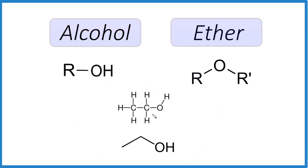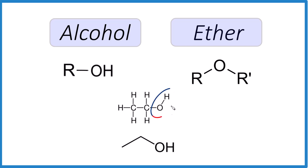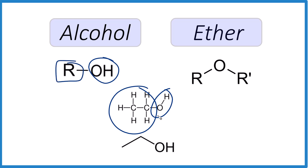Let's practice a few. We have two representations of the same molecule — this is a skeletal formula. Is this an alcohol or an ether? Pause and give it a try. Here you see that OH group bonded to the carbon; the rest of the molecule is here. This is definitely an alcohol.